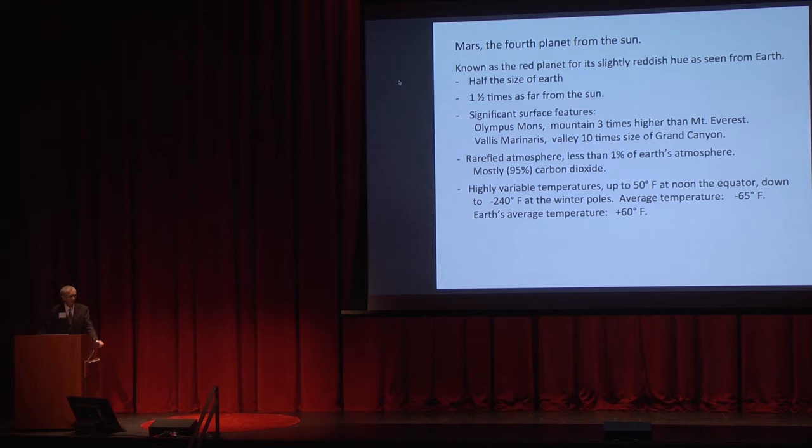The temperatures on Mars are very low because Mars is so far away from the Sun. The average noon temperature, or the highest noon temperature recorded, is about 50 degrees Fahrenheit. This would be at the equator. But it goes down to 240 degrees below zero at the winter poles. The average temperature is 65 degrees below zero. The average temperature on Earth is about 60 degrees above zero. So it means on Mars it's 125 degrees colder on average, and that's mainly due to the fact that Mars is one-and-a-half times farther away from the Sun.